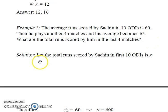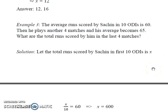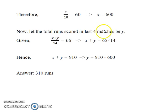Let the total runs scored by Sachin in first 10 ODIs be x. Since the average runs is given as 60, therefore we have this expression x divided by 10 equals 60. This implies the total runs made in 10 ODIs are 600.